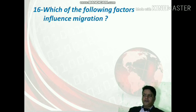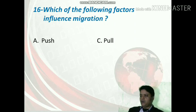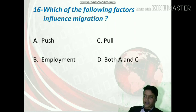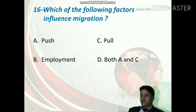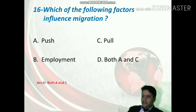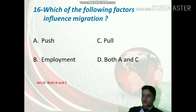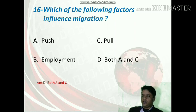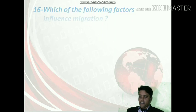Which of the following factors influence migration? The options are push factor, pull factor, employment, or both A and C. The correct answer is option D — both push factor and pull factor affect the population of a place through migration.